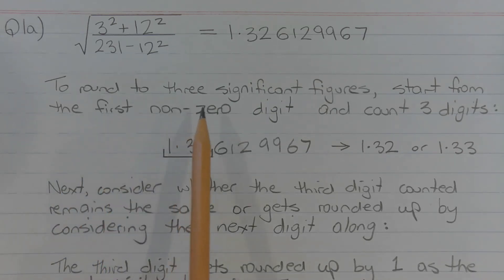To round to three significant figures, start from the first non-zero digit and count three digits, including that first non-zero digit.